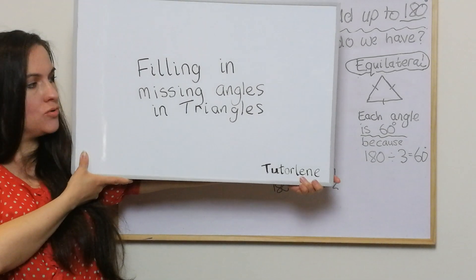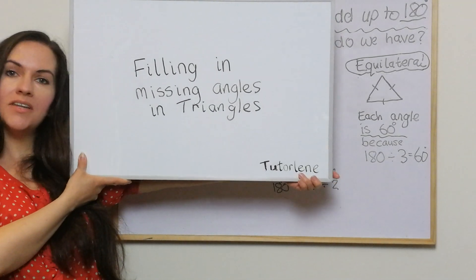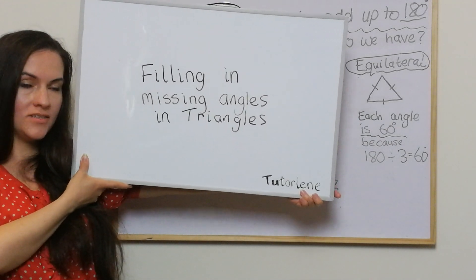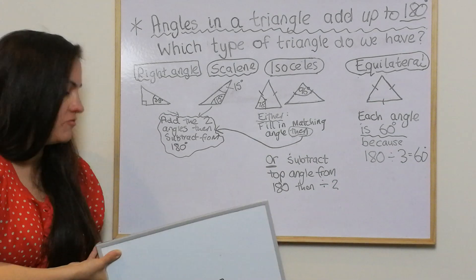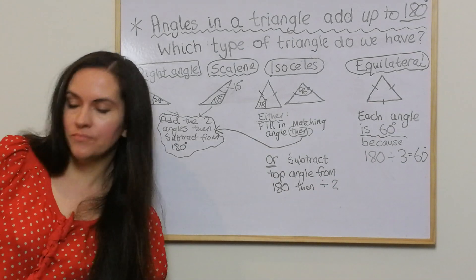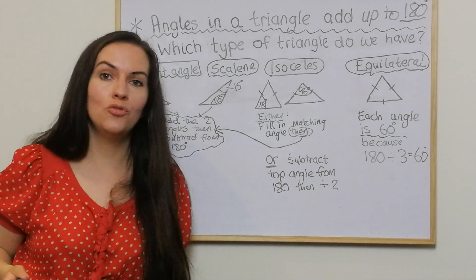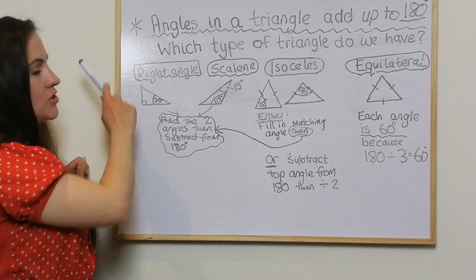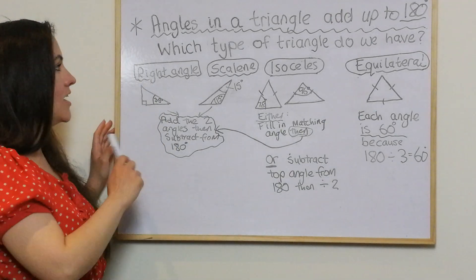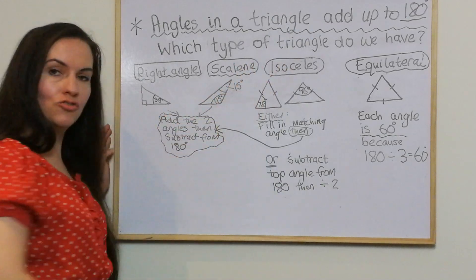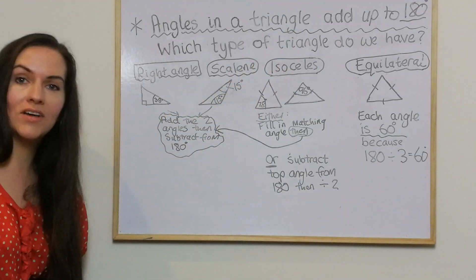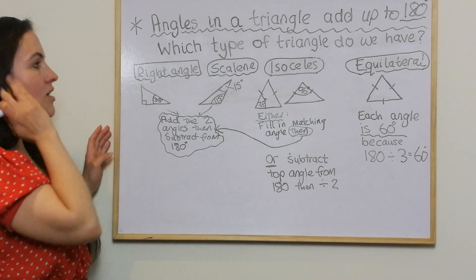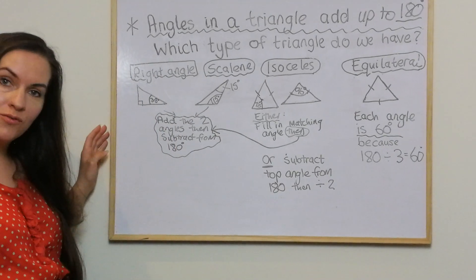In this video, we're going to be looking at filling in missing angles in triangles. This was a viewer's request. I've made a little reference guide as to how to do this depending on the type of triangle you've got. The first thing we should always remember is that angles in a triangle add up to 180 degrees — that's something you need to know.